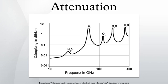In electrical engineering and telecommunications, attenuation affects the propagation of waves and signals in electrical circuits, in optical fibers, and in air. In many cases, attenuation is an exponential function of the path length through the medium. In chemical spectroscopy, this is known as the Beer-Lambert law.